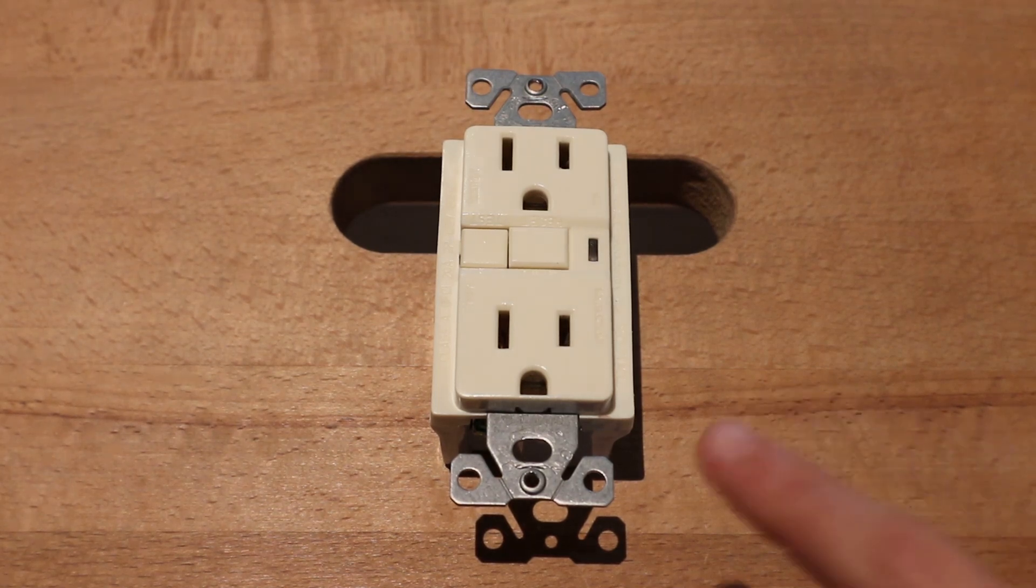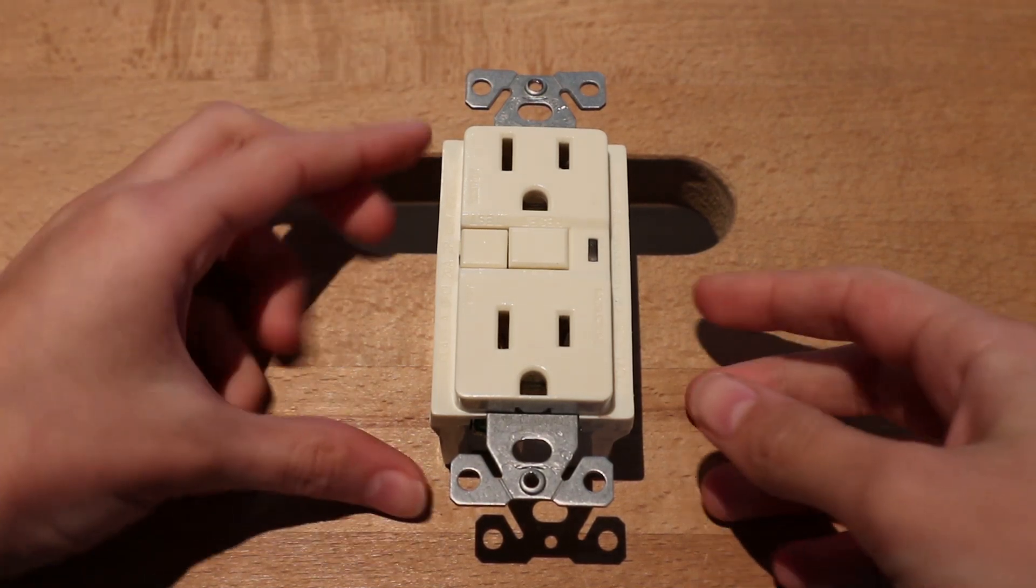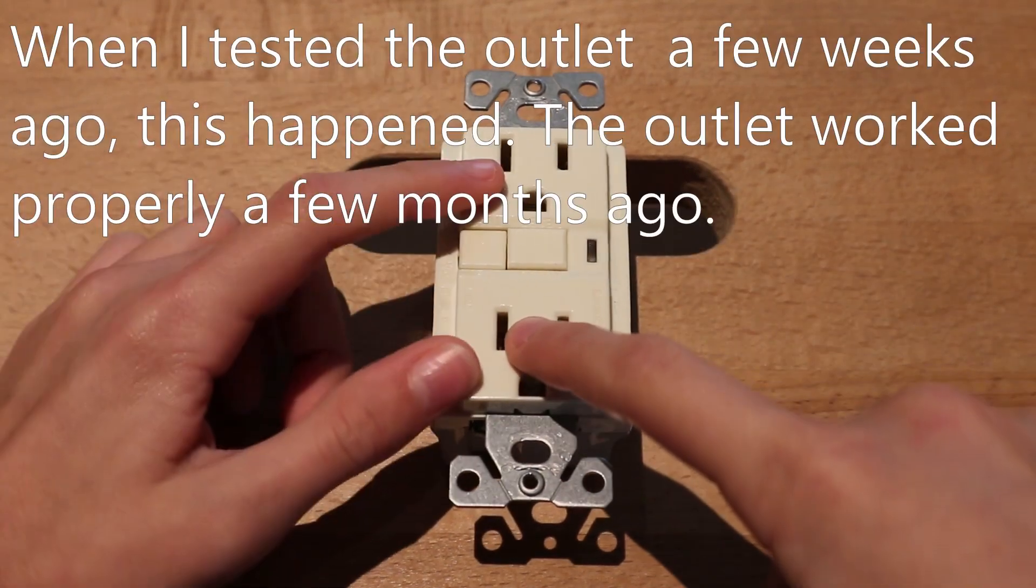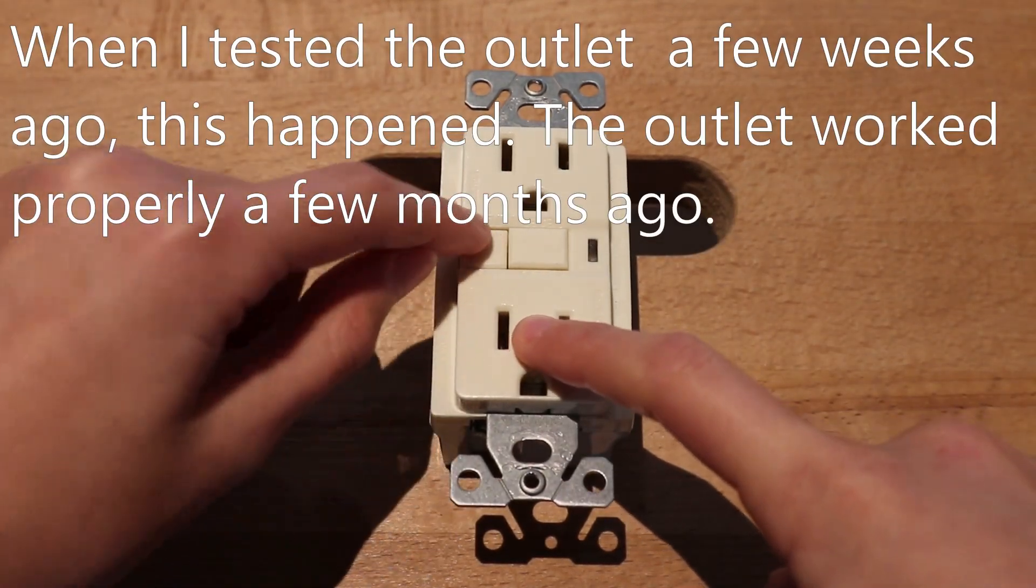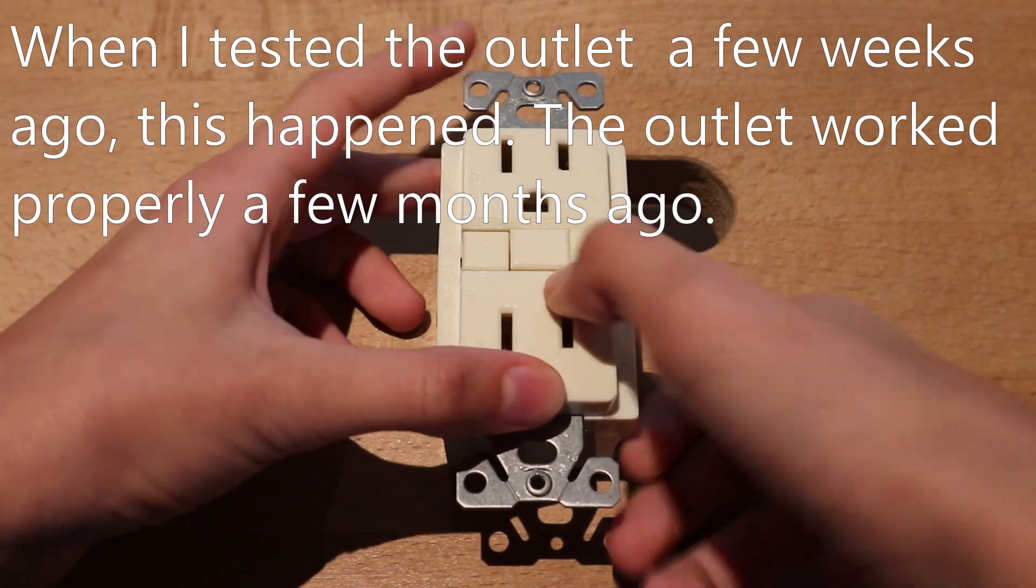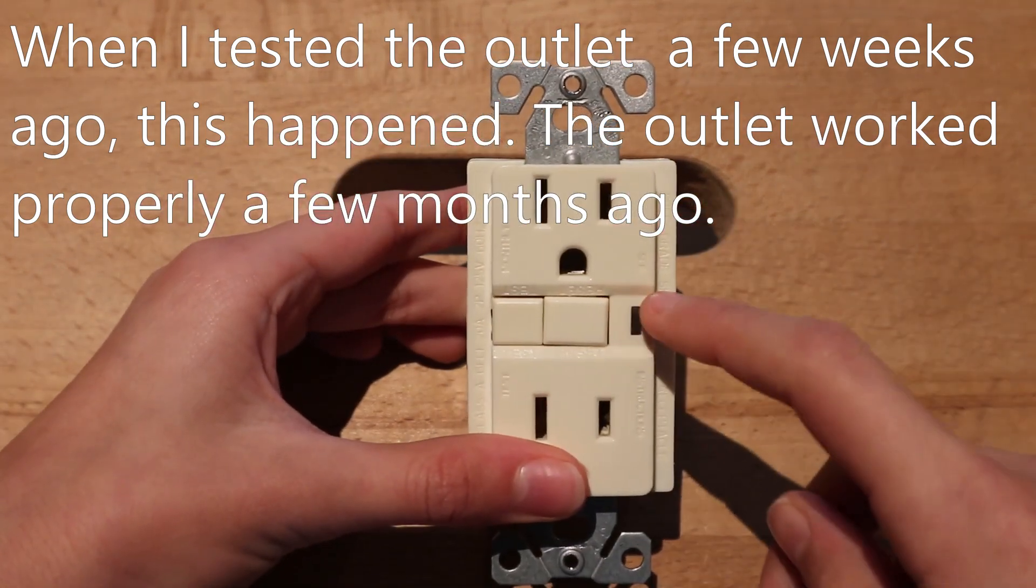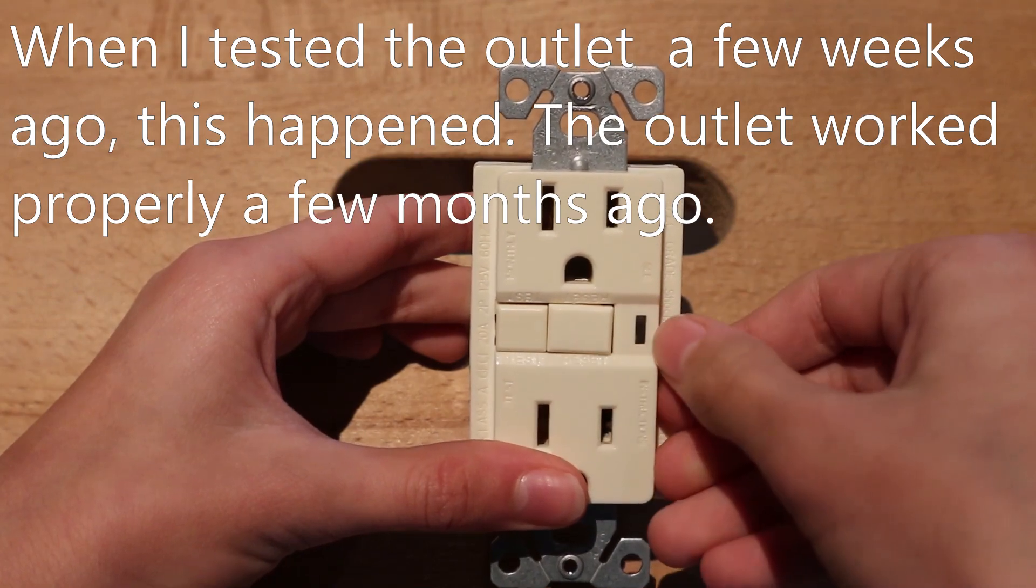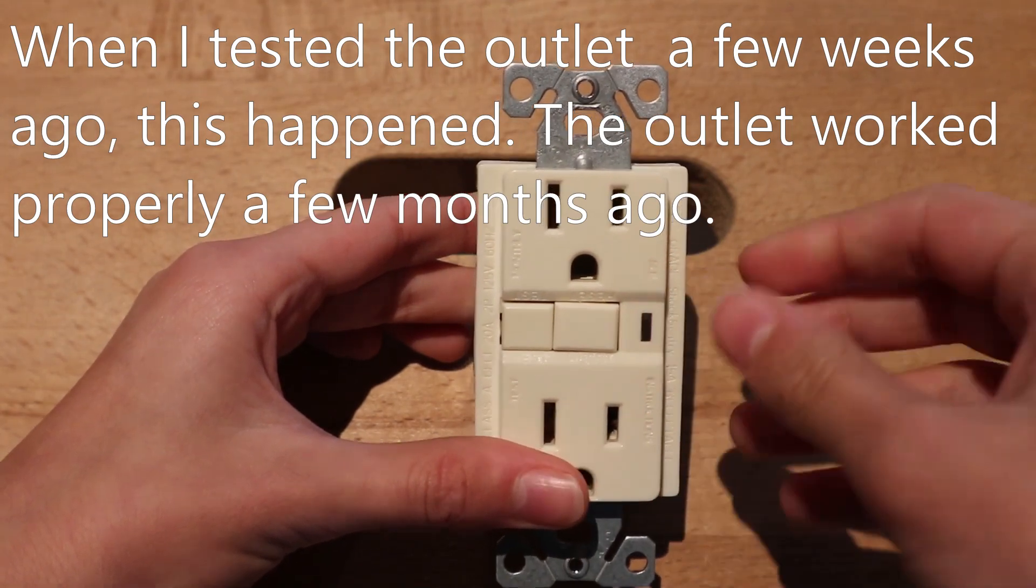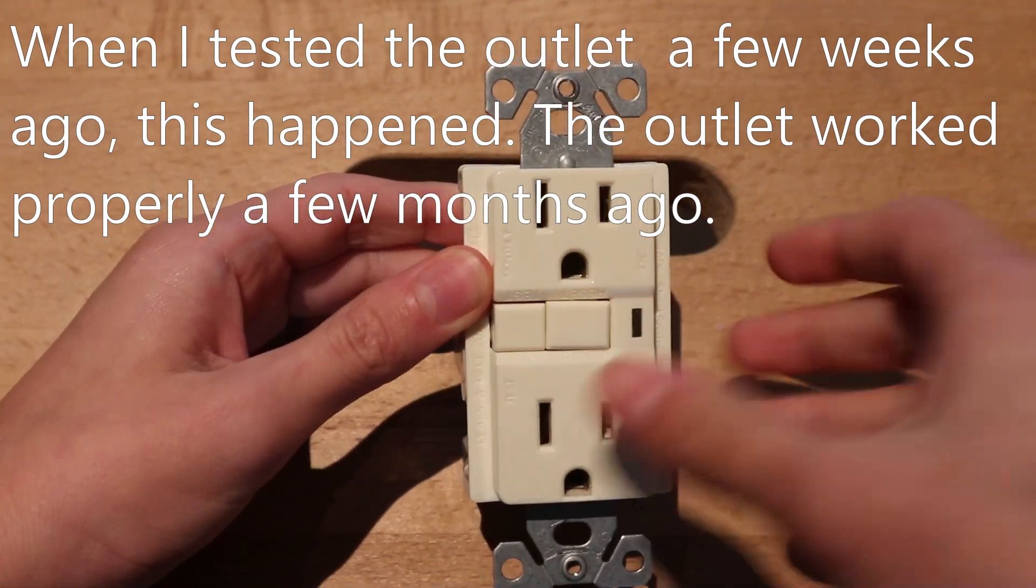Today I'm going to take apart this faulty GFCI outlet. When it was installed, the test button tripped the outlet, but the reset button, when I pushed it, did not stay in, and the orange light stayed on forever, and the outlet did not get any power.